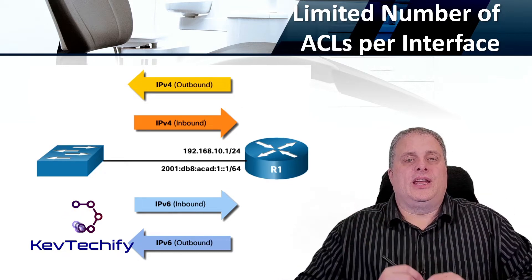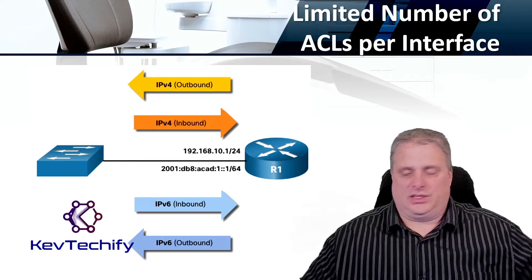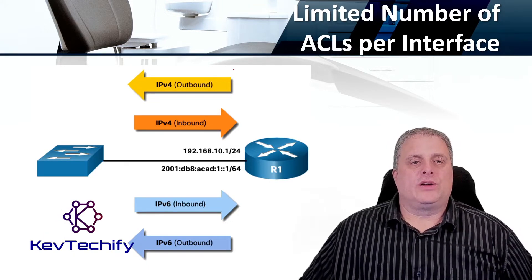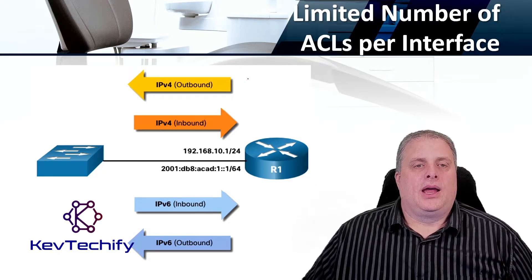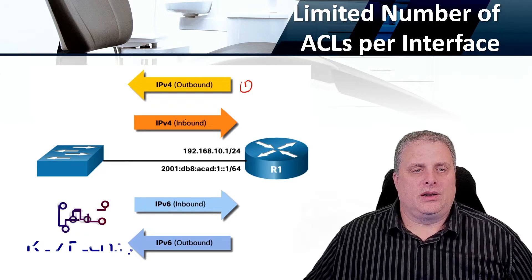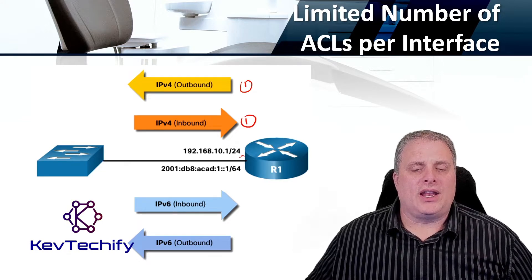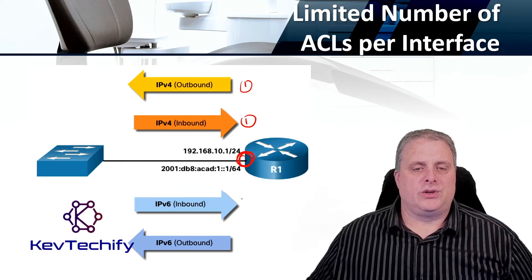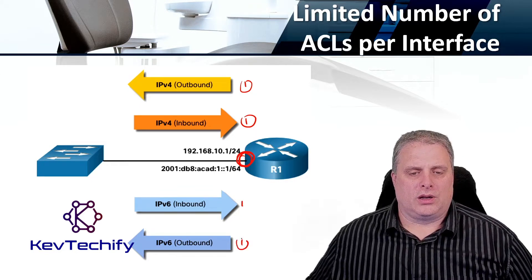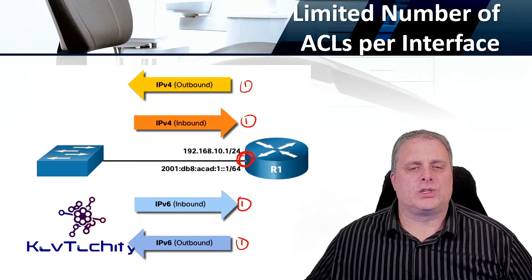How we get those four is: there are two IPv4 ones and two IPv6 ones. For each of IPv4 and IPv6, there can be one outbound and one inbound. Right here we have our IPv4 outbound — that's one — then we have our inbound IPv4 — that's two — located on just this interface. And then if you're running IPv6, you can have an inbound one and an outbound one, giving you a total of four access control lists on that interface.